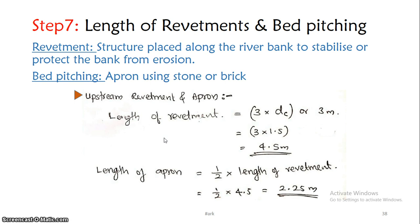Then, the length of the apron — that is, the bed pitching. This revetment length is half of the apron. Half of 4.5 is 2.25 meters. So 2.25 meters is the length of the upstream apron, and we need to provide bed pitching for this length.